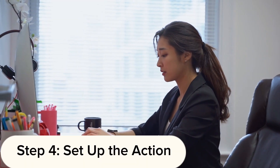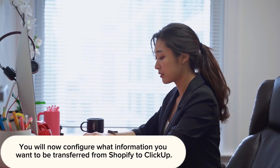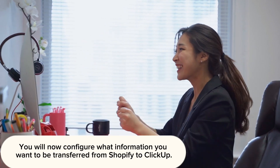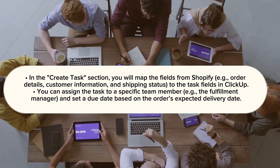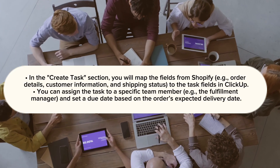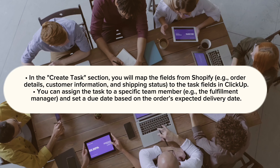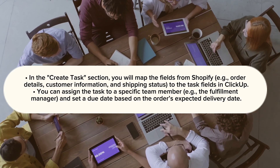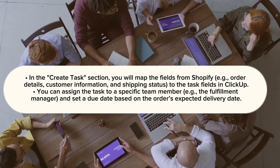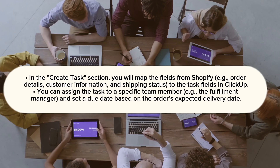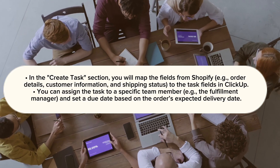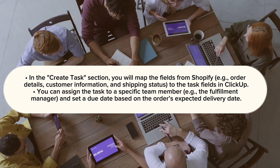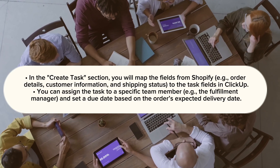Step 4: Set up the action. You will now configure what information you want to be transferred from Shopify to ClickUp. In the Create Task section, you will map the fields from Shopify — for example, order details, customer information, and shipping status — to the task fields in ClickUp. You can assign the task to a specific team member, such as the fulfillment manager, and set a due date based on the order's expected delivery date.